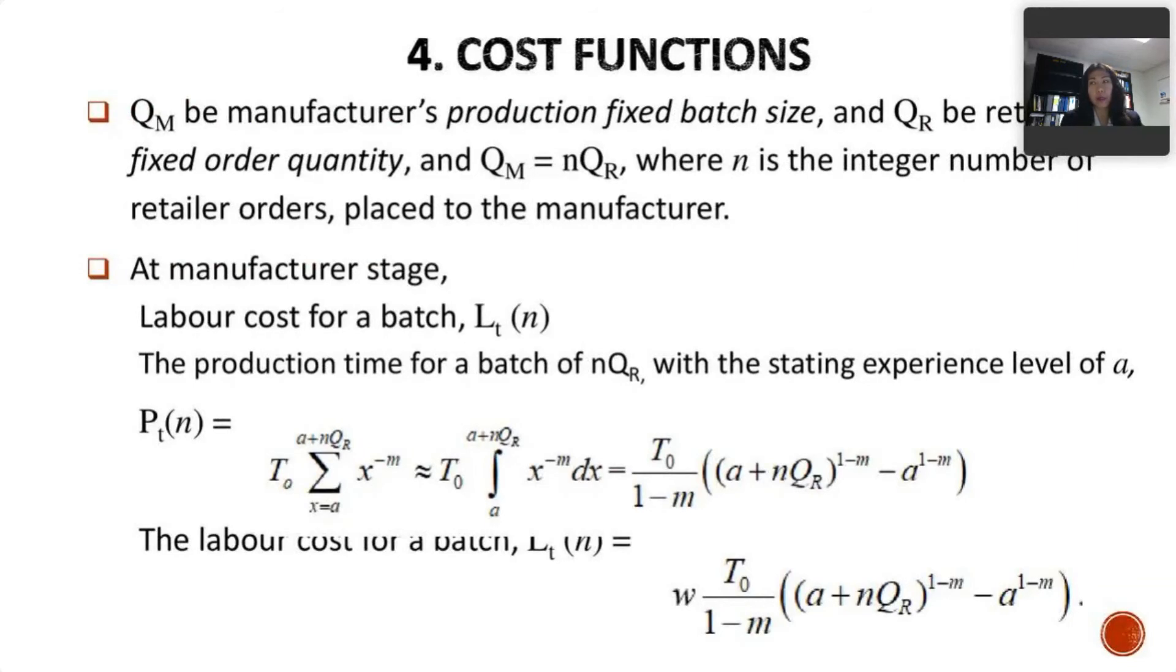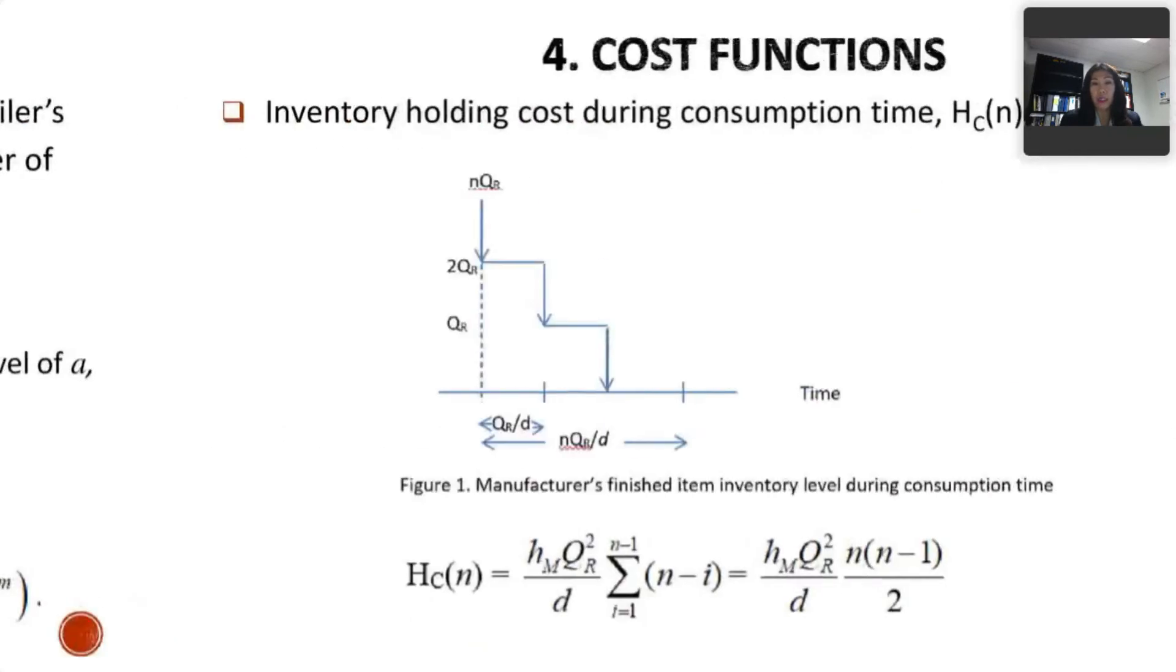Now, how to derive the optimal algorithm or the algorithm that provides the least cost? We need to be able to write up the cost functions. There are two stages, so there are costs at the retailer and costs at the manufacturer. We define Q_M be the manufacturer production fixed batch size and Q_R is the retailer fixed order quantity. The manufacturer batch size is the integer multiple of the retailer order quantity. At manufacturer stage, workers work on producing units to work on producing batches. At the retailer, there are production time and production costs. These are mathematics forms of production time, and the function below here is the forms of production costs.